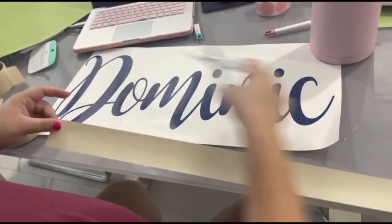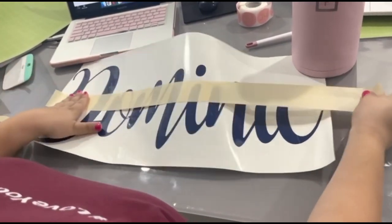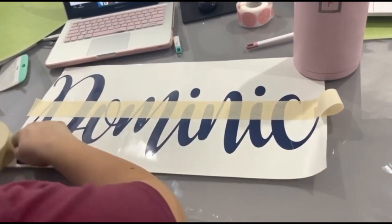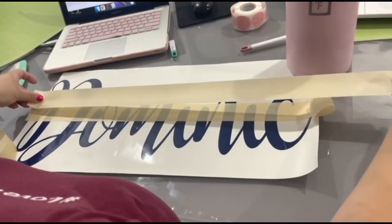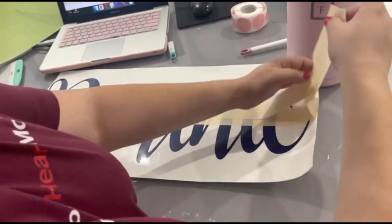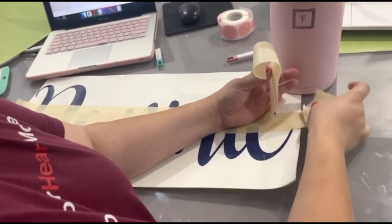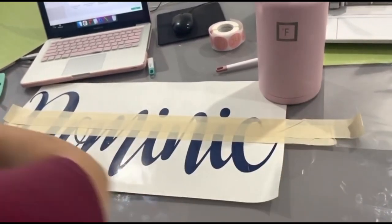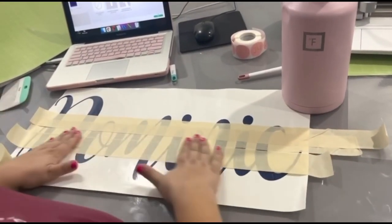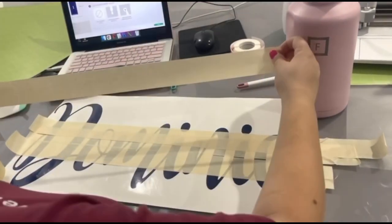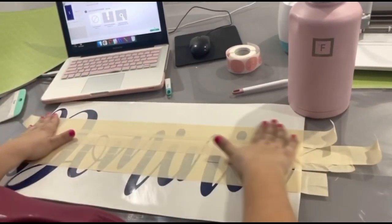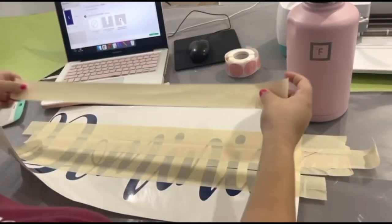After you're done weeding, you're going to use whatever preference you have for your transfer paper. I like to use masking tape - it's just what I had handy and I think it does a great job. It's very affordable to use and comes in different sizes. Depending on the masking tape you have and the size of your design, you may have to layer it like I am doing here.